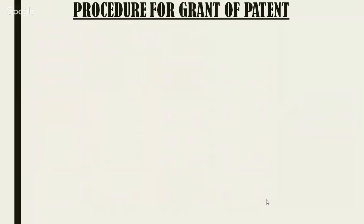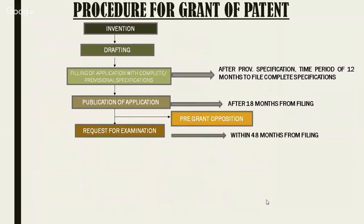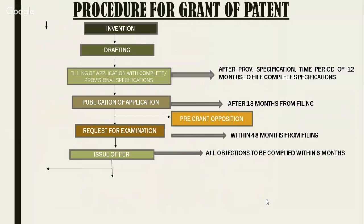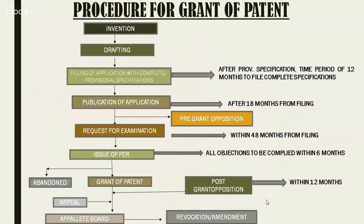After publication, you file a request for examination. A First Examination Report (FER) is generated. If the response is satisfactory, the case may proceed without further reports or go to hearing. After a decision, the case may be abandoned or receive a grant. After grant, post-grant opposition is open. If a person is not satisfied, they can file an appeal at IPAB and then revoke, amend, or continue with the patent.